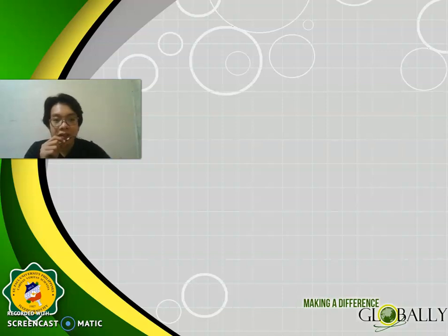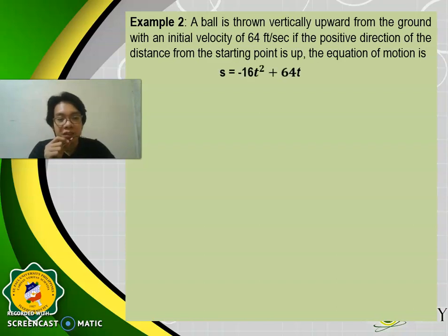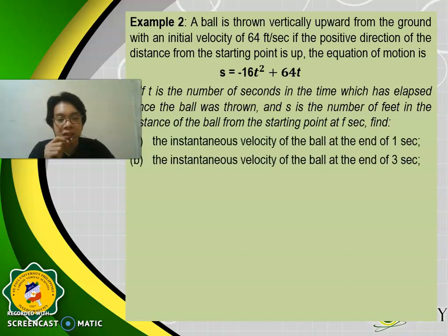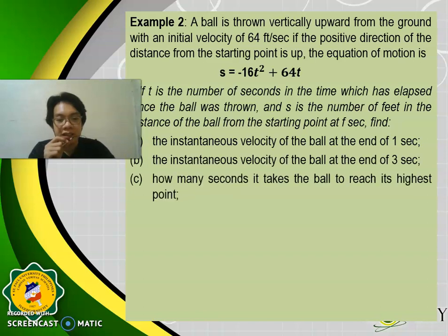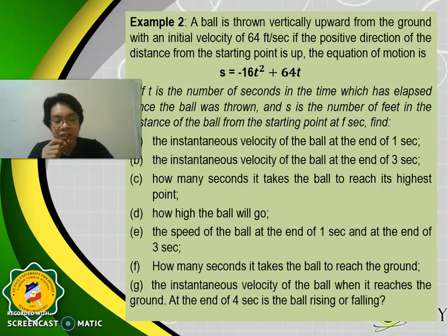For further clarification, let's proceed with our next example. A ball is thrown vertically upward from the ground with an initial velocity of 64 feet per second. If the positive direction of distance from the starting point is up, the equation of motion is S = −16T² + 64T. T is the number of seconds elapsed since the ball was thrown, and S is the distance in feet from the starting point. Find: A) the instantaneous velocity at the end of 1 second; B) at the end of 3 seconds; C) how many seconds it takes to reach its highest point; D) how high the ball will go; E) the speed at the end of 1 second and 3 seconds; F) how many seconds it takes to reach the ground; and G) the instantaneous velocity when it reaches the ground — and is the ball rising or falling?